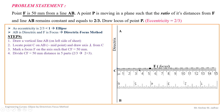Now we have to divide CF into a number of parts. It is good practice to divide CF into parts equal to the sum of the numerator and denominator of the eccentricity value. Here eccentricity is 2/3, so 2 plus 3 equals 5. We divide CF into 5 parts. Since CF is equal to 50 mm, we divide it into 5 equal parts of 10 mm each.